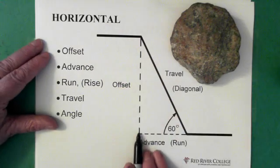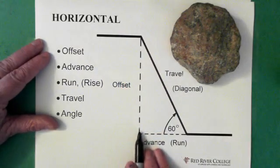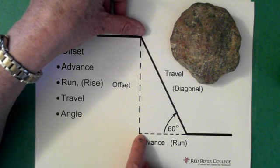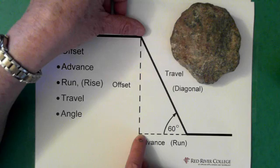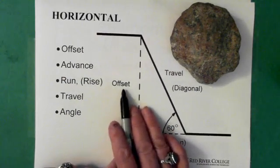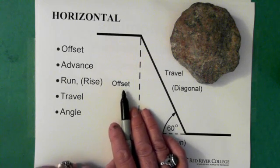The offset, again, is the distance that you've moved it vertically. And the angle, again, is always opposite the offset.